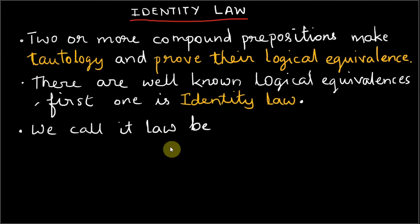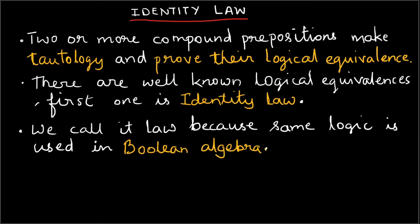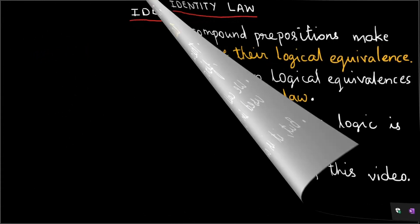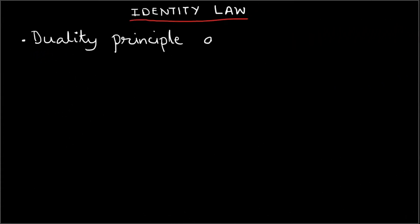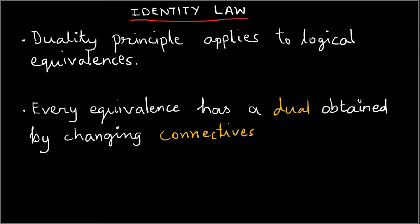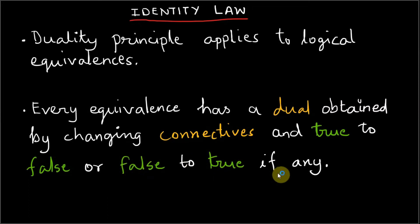We call it law because the same logic is applied in Boolean algebra, which is another branch of mathematics that studies and understands logic in terms of algebra. But that is out of scope for this video. As I mentioned earlier, duality applies to logical equivalences. Every logical equivalence has a dual obtained by changing the connectives and true to false or false to true, if any.